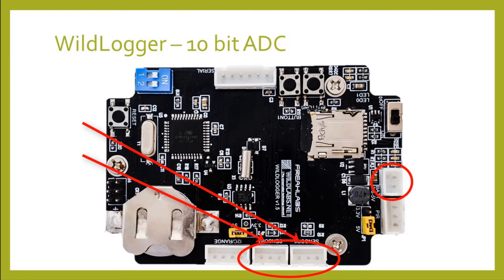There are two sensor ports on the wildlogger, and they correspond to analog pins A0 and A1. This means that, along with being able to handle a digital sensor, like the DHT11, it can also handle sensors that output analog values.